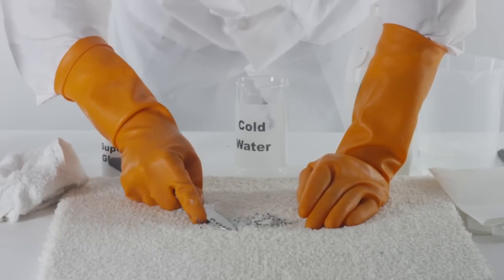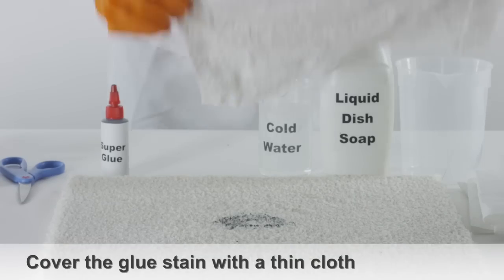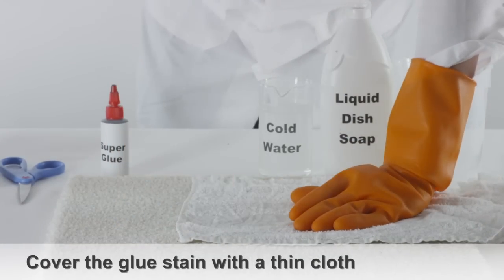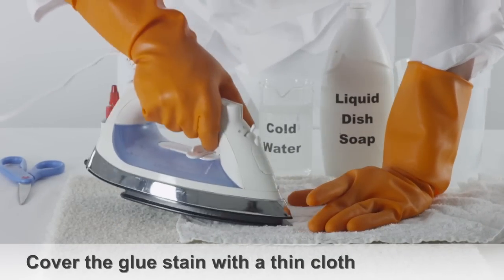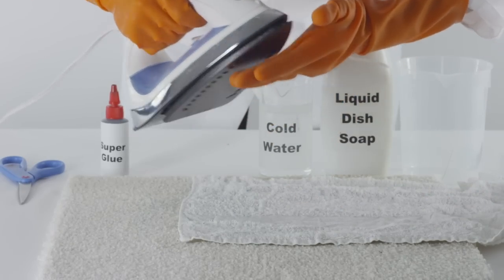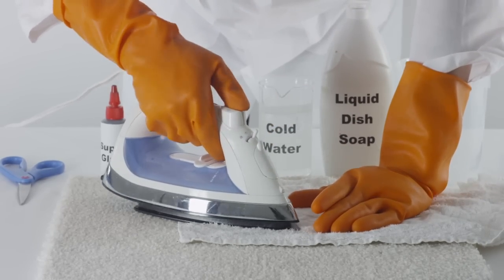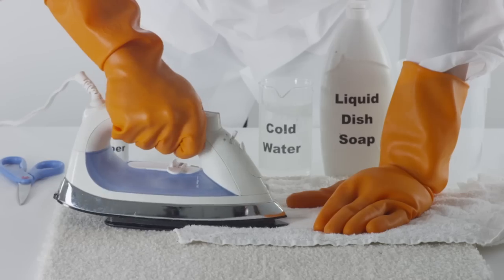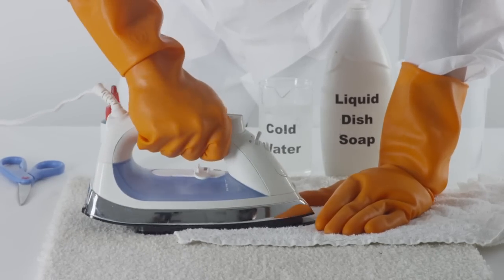After you have scraped as much of the glue away as possible, cover the glue stain with a thin cloth. Using a household iron, begin to heat up the glue by running a hot iron over the cloth which is sitting on top of the glue stain. The glue should soften, which will then be absorbed into the thin cloth.